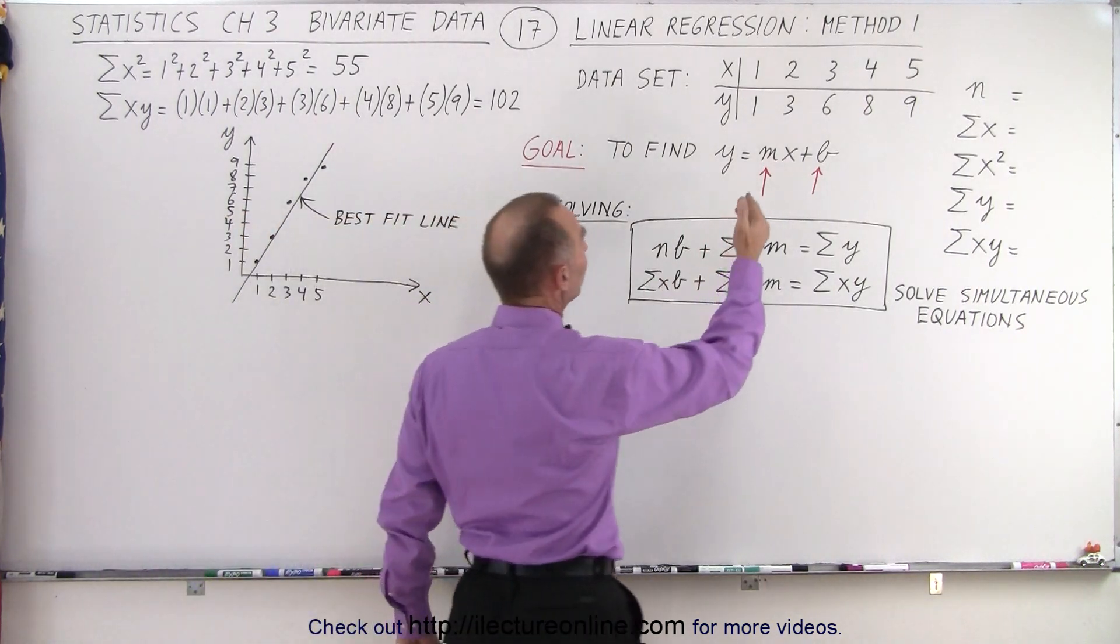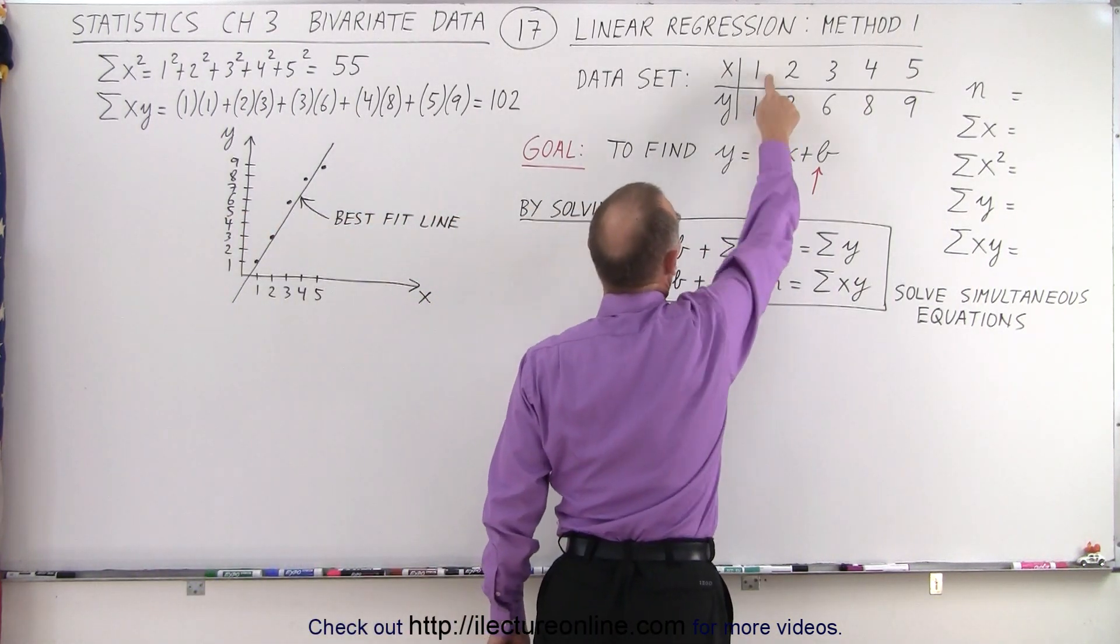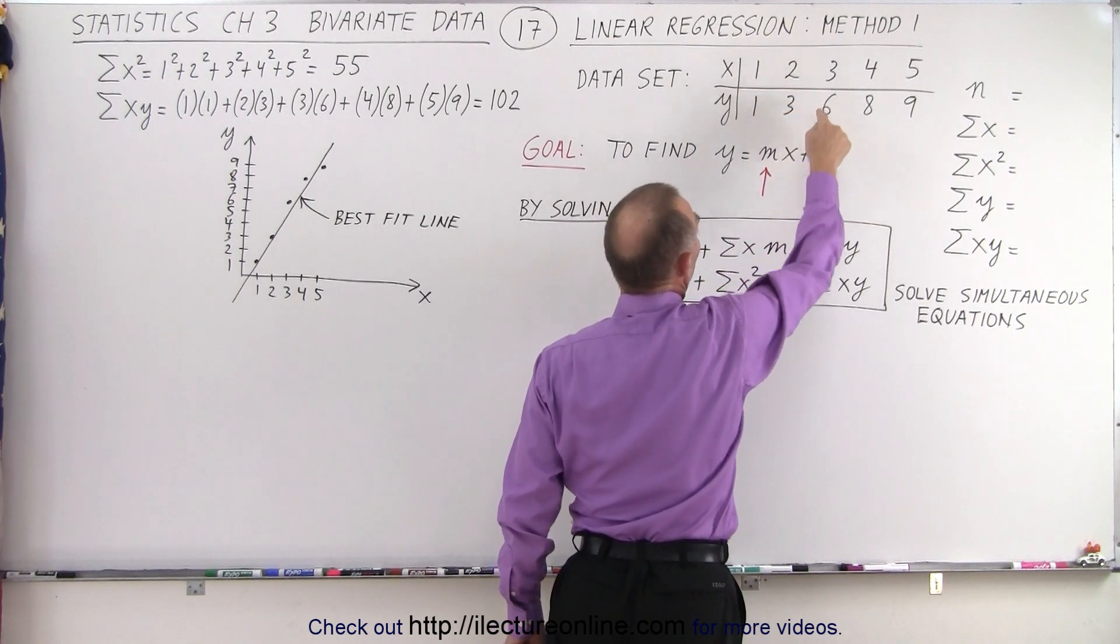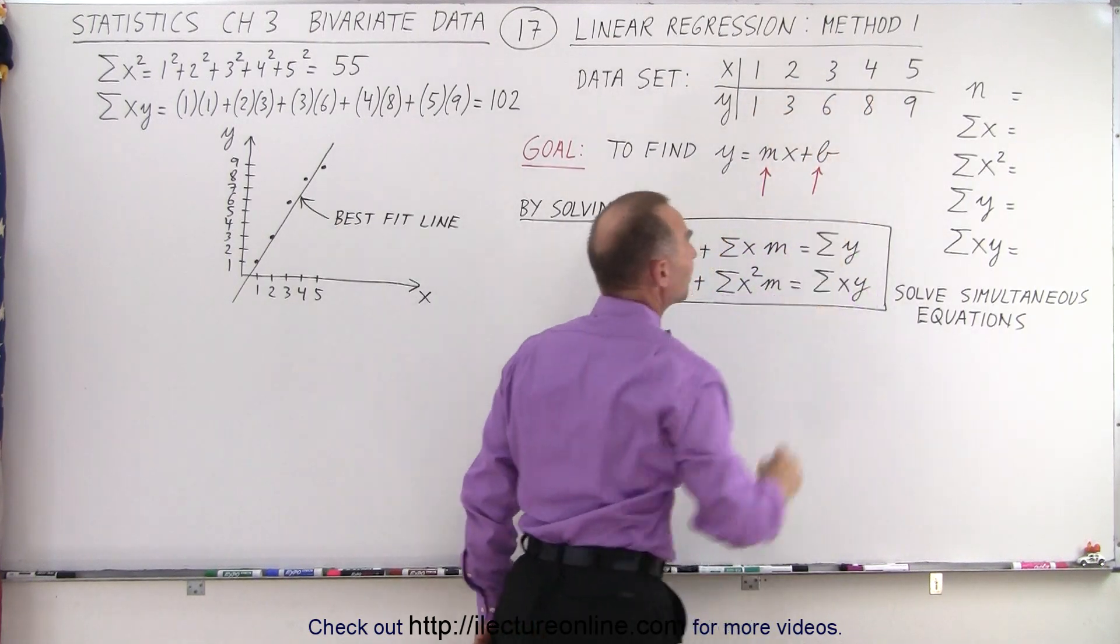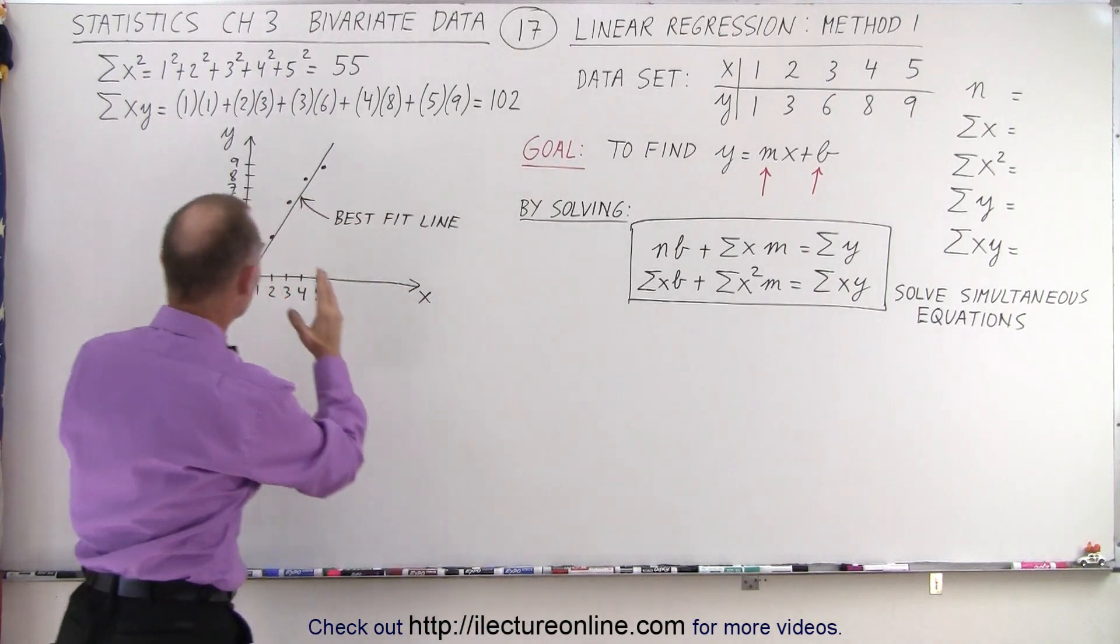So let's say we have these five data points. They each have an x and a y value: 1,1, 2,3, 3,6, 4,8, and 5,9. And we've graphed them on our graph right here.